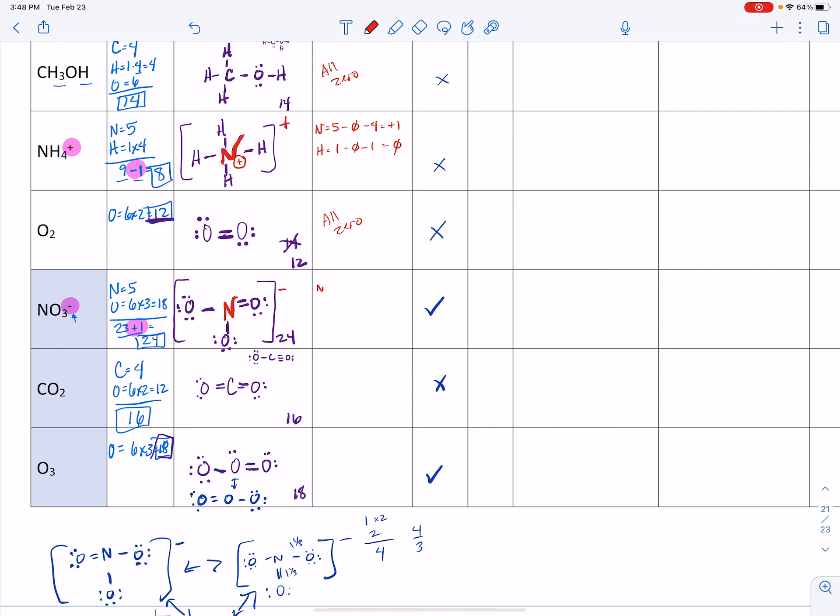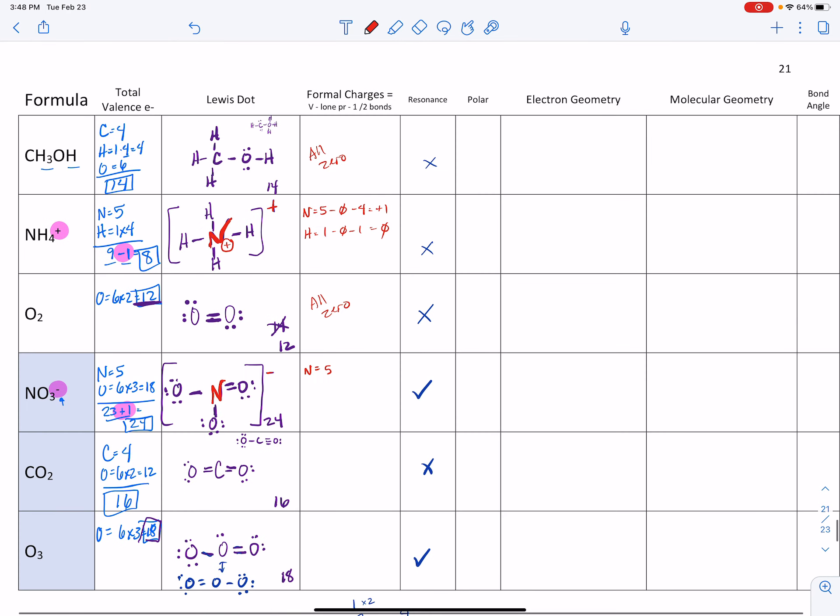So let's do nitrogen. Nitrogen is five minus zero lone pairs minus four bonds—that gives him a formal charge of plus one. Notice that's not the same thing as this negative charge. Let's do our oxygen, the one that has a double bond. So I'm going to write DB above it. So he's six minus he's got four lone pairs and he's got two bonds, so he's zero. So that double bond oxygen is very happy. Oxygen does like his double bonds.